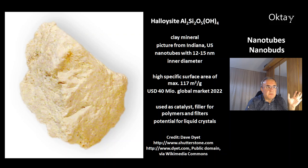This is halloysite, another aluminum silicate hydroxide clay mineral. This picture is from a mineral from Indiana in the USA. These nanotubes have an inner diameter of 12 to 15 nanometers. They have a high specific surface area of maximum 117 square meters per gram. The global market in 2022 for halloysite was a 40 million US dollar market. Halloysite can be used as a catalyst, as filler for polymers and filters, and has potential for liquid crystals.